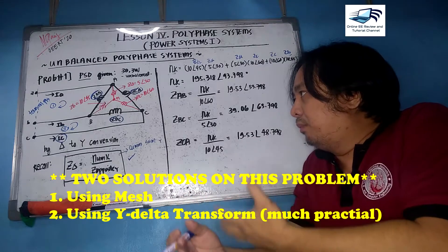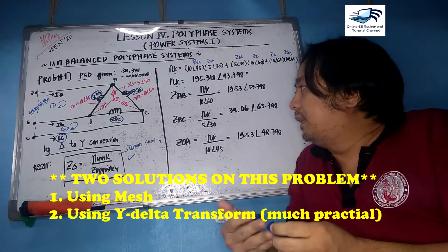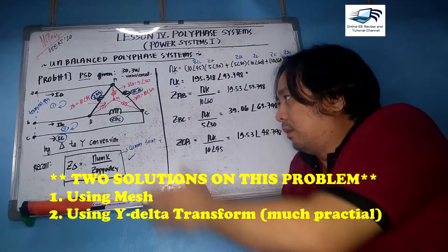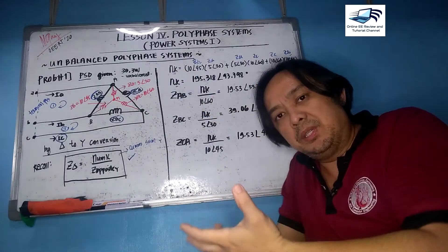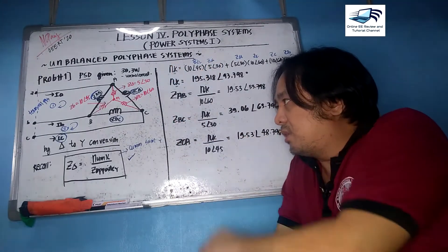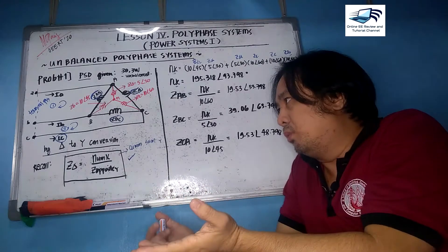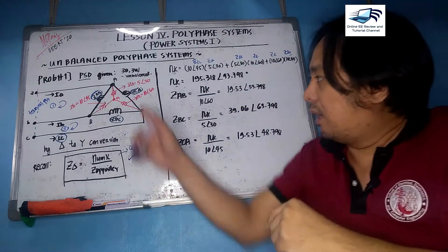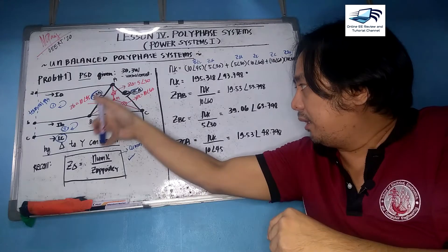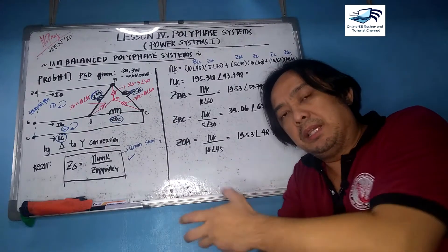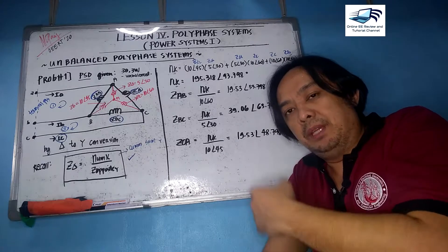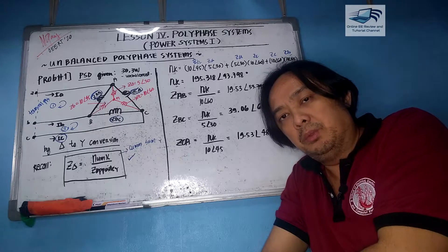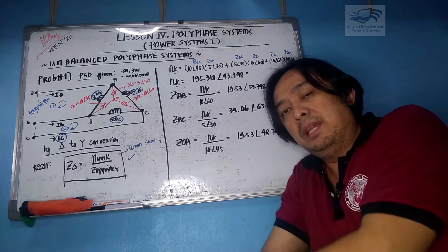You now have all three delta-connected impedances. The first solution uses the Y-connected form with two meshes and Cramer's rule from the matrix. The second solution converts to delta, then uses circuit analysis to get phase currents, then applies ABC formula number two to get the line currents. That will be executed on the next slide.